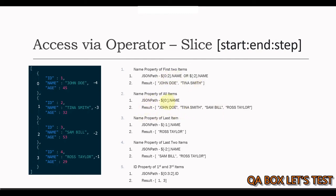Likewise, we can omit the end index. If end is omitted, it selects all elements from start until the end of the array. So the name property of all items could be found using dollar, providing only the start index, then colon leaving out the remaining two, and then dot name. This will give us all the names.